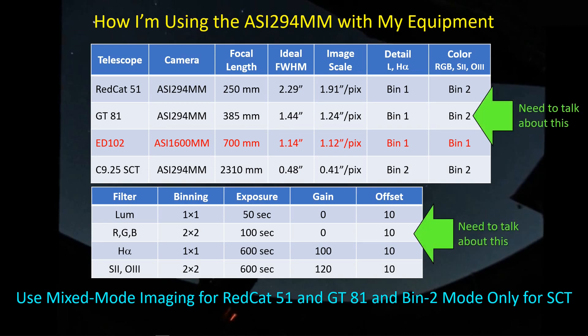In going through the data that I've collected, there are a couple of things we need to talk about here. First, some lessons learned about combining BIN-2 images with BIN-1 images to come up with the final BIN-1 image, and then second, something is going on with my RGB filters and the images I've collected with them in BIN-2 mode.